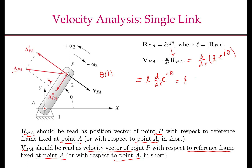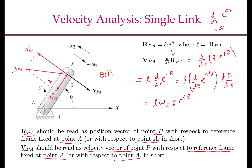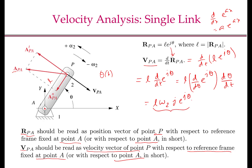By the chain rule, this can be written as L times d/dθ of e^(jθ) times dθ/dt. Now dθ/dt is the angular speed of the link, which we will call ω₂. So we write L·ω₂, and d/dθ of e^(jθ) is j·e^(jθ) — since for the derivative of an exponential, d/dx of e^(ax) equals a·e^(ax), the constant comes out. Therefore, V_PA becomes L·ω₂·j·e^(jθ), as shown here.